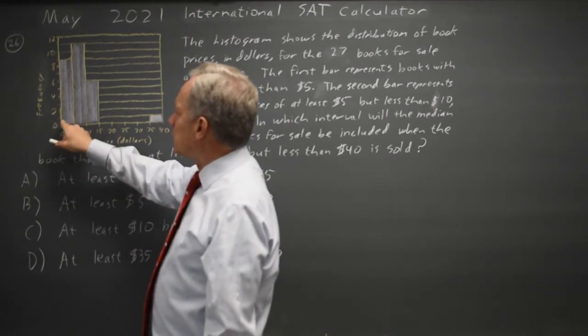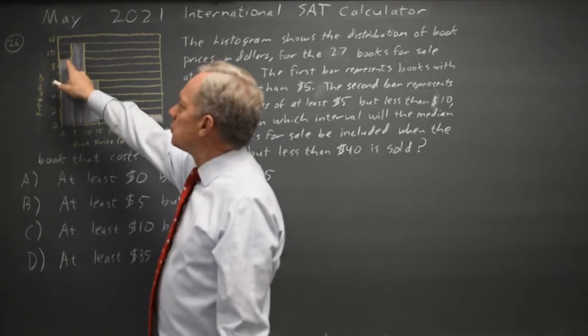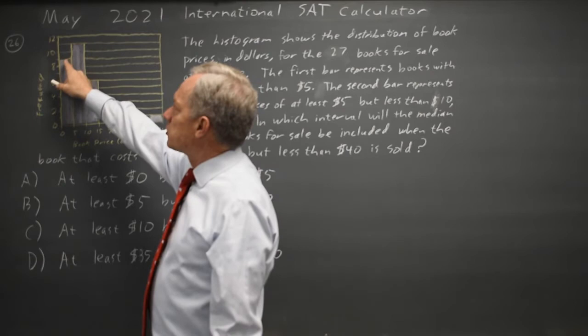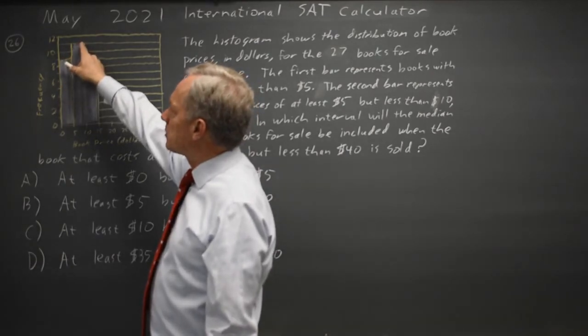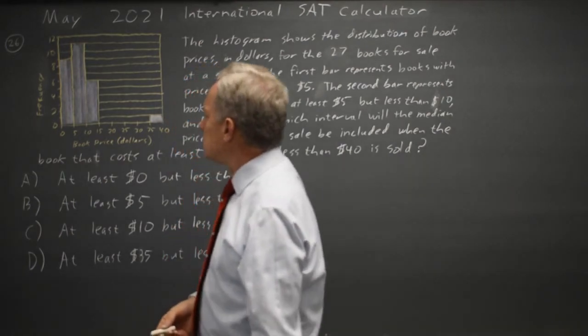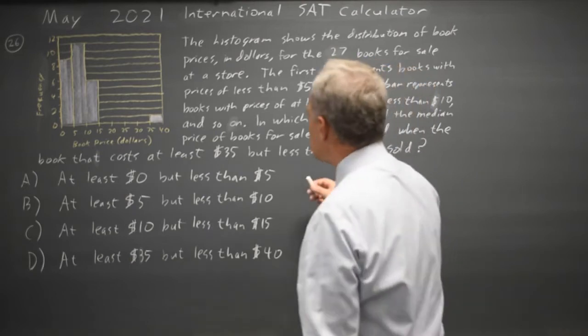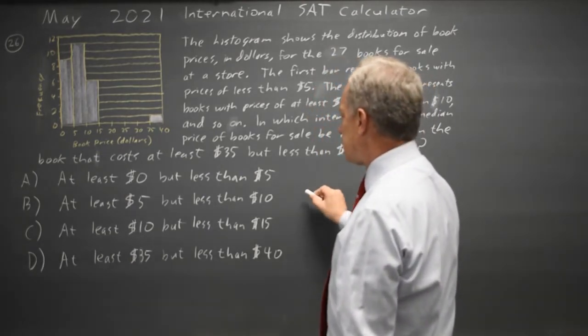It's not 0 to 5 because there's only 9 in that group. Everything from number 10 to number 20 is in the group from 5 to 10. So the middle between the 13th and 14th price will be between 5 and 10.